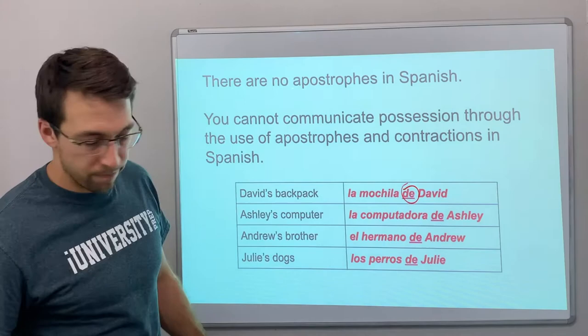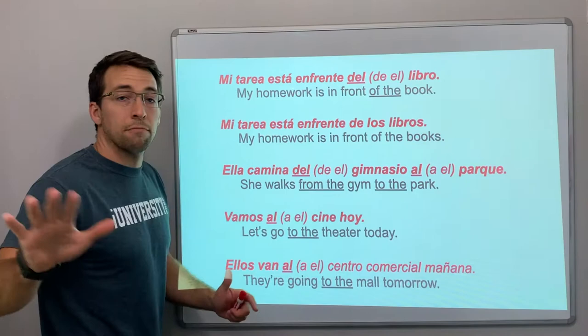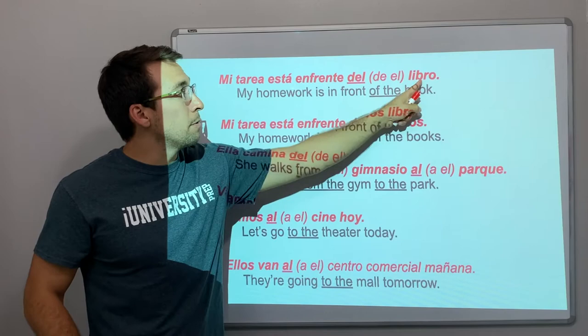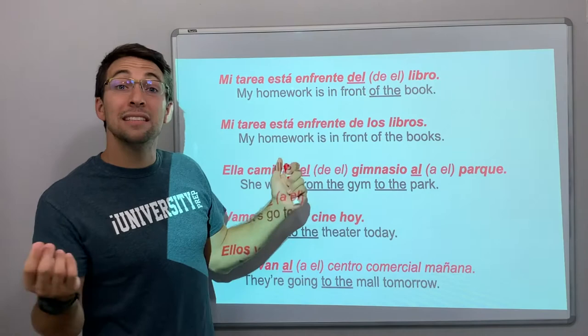Here are five examples. Mi tarea está en frente del libro — my homework is in front of the book. 'Of the' becomes del because libro is masculine and singular, so it's el. De plus el is del.